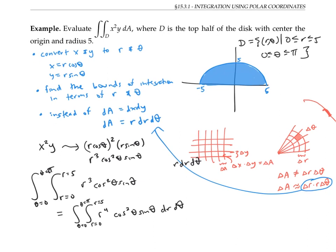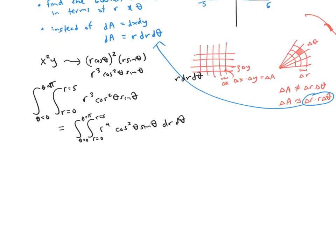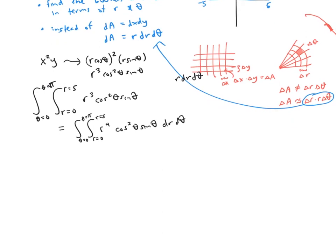This integral simplifies to the integral of r to the fourth, cosine squared theta, sine theta, dr dθ. We need to integrate with respect to r first, that's our inner integral. But since cosine squared theta sine theta is a constant with respect to r, we can pull that constant multiple outside this integral sign. Furthermore, this whole integral here, once I compute it will just be a number. So I can pull this constant multiple out of this integral sign.